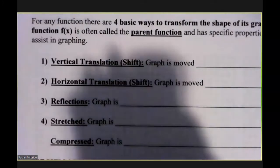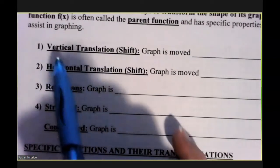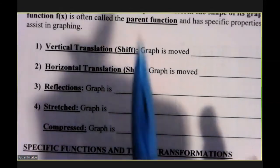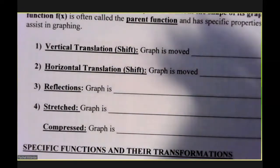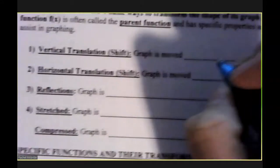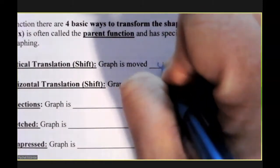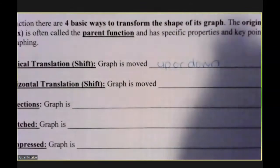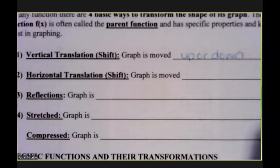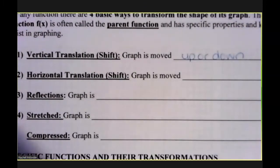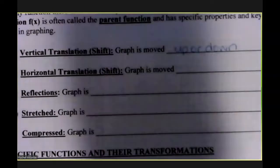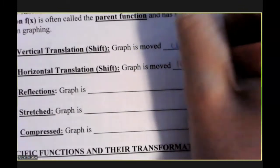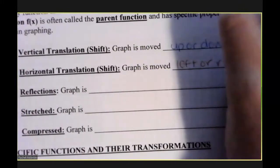A vertical translation - if you think about the word vertical, vertical means up and down. A vertical translation is a graph that is moved up or down. A horizontal translation is a shift or a movement left or right.